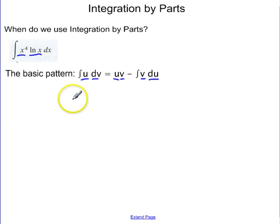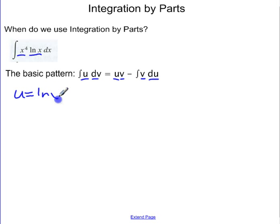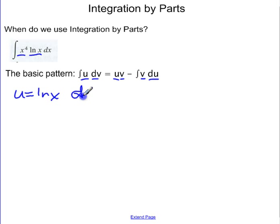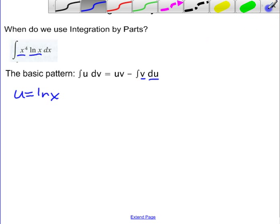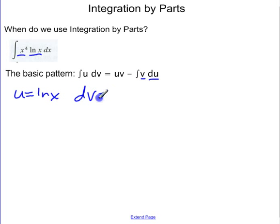That looks more complicated than what we're starting with, but it actually makes things a lot easier. So here's what we're going to do: let u equal the natural log of x. So everything else is going to be dv, which means dv is going to be x to the fourth dx.